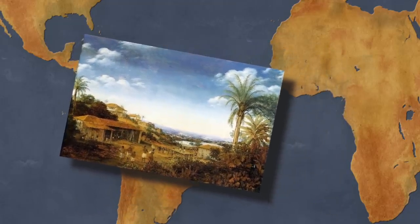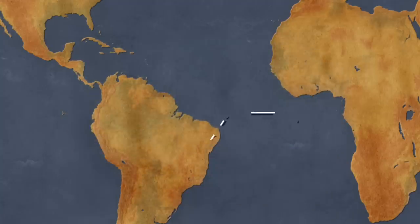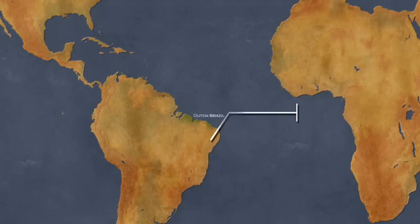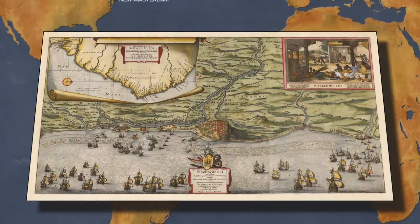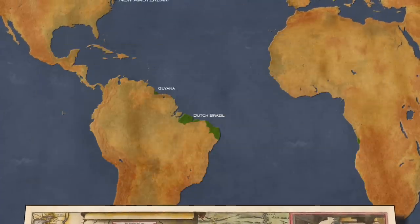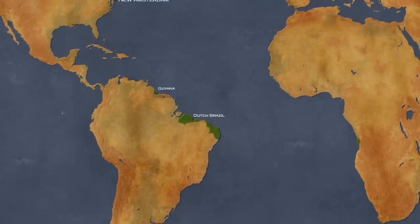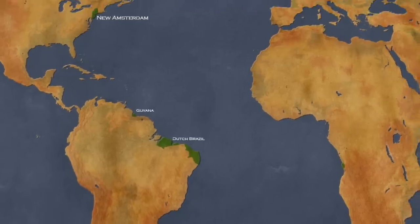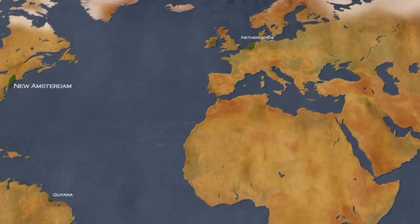In the summer of 1629, the Dutch had a newfound interest in rich sugar plantations, so they wanted to obtain the Brazilian state of Pernambuco — the largest and richest sugar production area. The Dutch sent a fleet of 65 ships and managed to get it. Dutch Brazil, also known as New Holland, was the northern portion of the Portuguese colony of Brazil, ruled by the Dutch during their colonization of the Americas between 1630 and 1654.